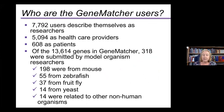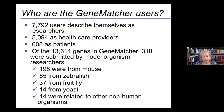Who are these folks? Close to 8,000 describe themselves as researchers, another 5,000 — with some overlap — describe themselves as healthcare providers. There are 608 patients or family members who have submitted to GeneMatcher. Of the 13,614 unique genes, 318 were submitted by model organism researchers looking for human matches to their models, mostly from mouse but a few from other organisms.